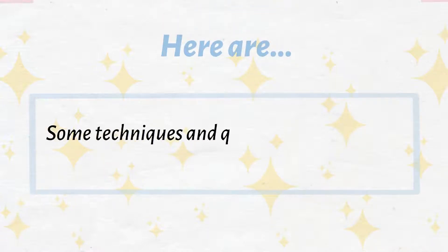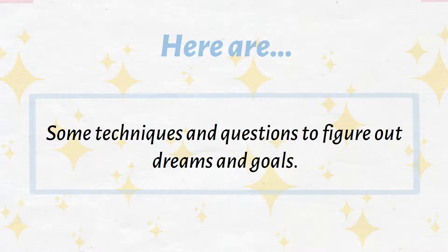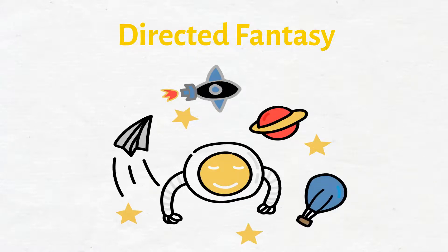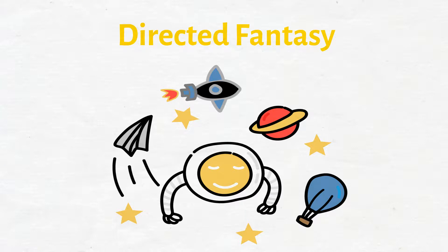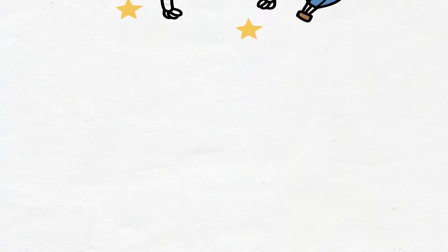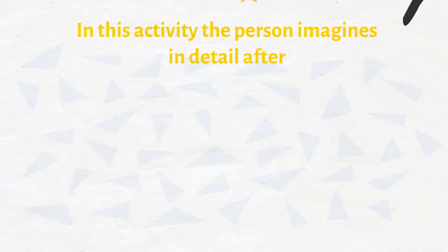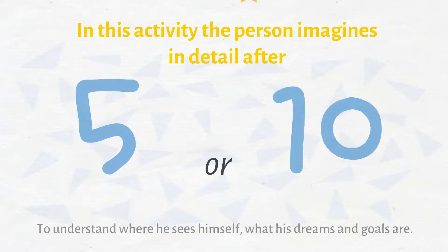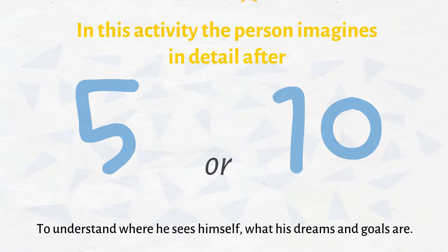Some techniques and questions to figure out dreams and goals. Directed fantasy: It has been argued that one of the qualities that makes us all human is our imagination. In this activity, the person imagines in detail after 5 or 10 years to understand where he sees himself, what his dreams and goals are.